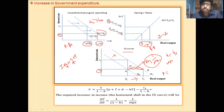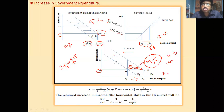If the government expenditure decreases, what happens? Then savings will fall. As a result, to maintain the goods market in equilibrium, the IS curve will shift leftward towards the origin. And in that case, the income will fall. If the initial income is Y0, then it will be Y1, which is less than Y0, because there is a decrease in government expenditure.